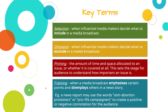Another key term is framing — this is where the media emphasises certain points and downplays others in the news story. An example might be a news report that uses the words 'anti-abortion protestors' versus an alternative news report that uses the words 'pro-life campaigners', creating either a positive or negative connotation for the audience. Using one term over the other aims to influence audience perception of that particular group of people.